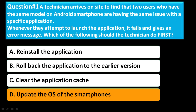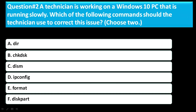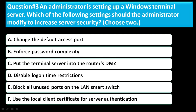Question 2: A technician is working on a Windows 10 PC that is running slowly. Which of the following commands should the technician use to correct this issue? Choose two. Option A: DIR. Option B: CHKDSK. Option C: DISM. Option D: ipconfig. Option E: FORMAT. Option F: DISKPART. The correct answer is B and C — CHKDSK and DISM.